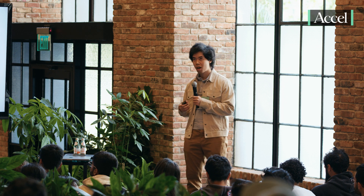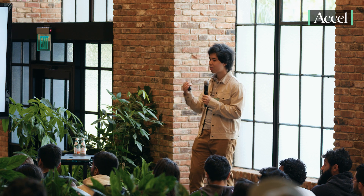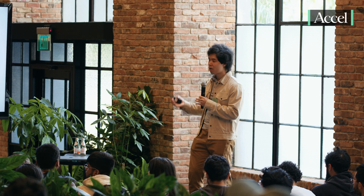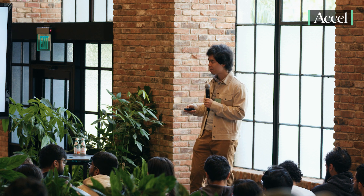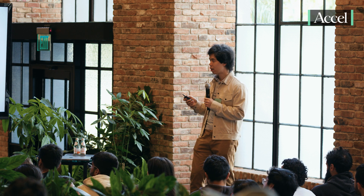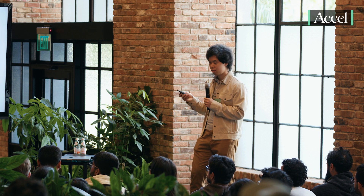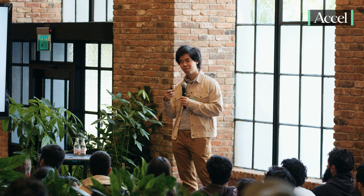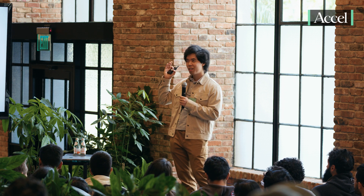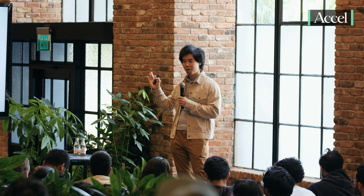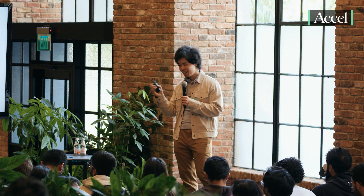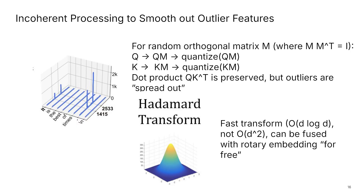We need to borrow some techniques from the machine learning literature — this is a recurring theme where we are optimizing on the system side but borrowing techniques from other fields. Here's an example: if you look at some of the features when you run LLMs, some of them have very, very large magnitude. Tim Dettmers actually wrote an excellent paper called LLM.int8 that talked about this — a landmark paper talking about outliers. I highly recommend checking out that paper.